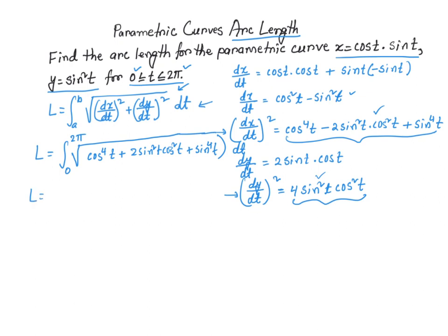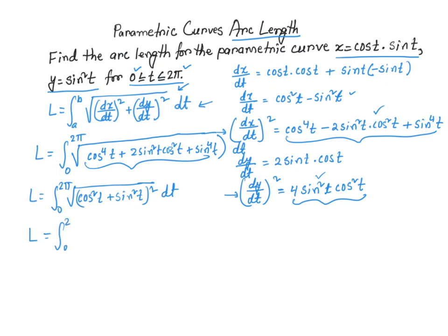I can simplify further: the integral from 0 to 2π of the square root of (cos²(t) + sin²(t))², since that expression is a perfect square. Since sin²(t) + cos²(t) = 1, we get the square root of 1², which is just 1. So L = integral from 0 to 2π of 1 dt, which equals t evaluated from 0 to 2π, giving 2π - 0 = 2π.